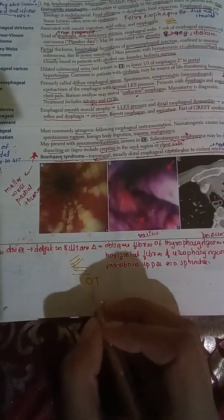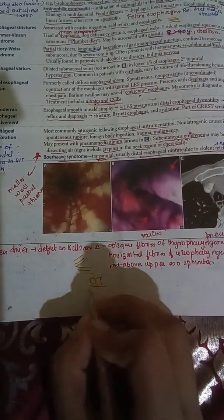Zenker's diverticulum is due to a defect in Killian's dehiscence, composed of oblique fibers of the thyropharyngeal muscle and horizontal fibers of the cricopharyngeal muscle. It is located just above the upper esophageal sphincter.